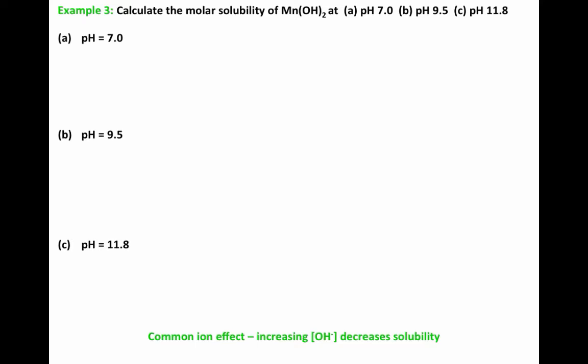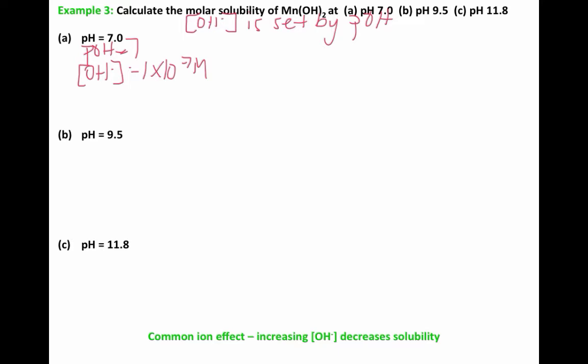Now we're going to look at calculating solubility at different pHs. The OH minus concentration is set by the pOH. If you're given pH, calculate pOH using 14 minus pH, then take the antilog — 10 to the negative pOH — to get your OH minus concentration. For part A, pH is 7, so pOH is 7, and the OH minus concentration is 1 times 10 to the negative 7th molar.